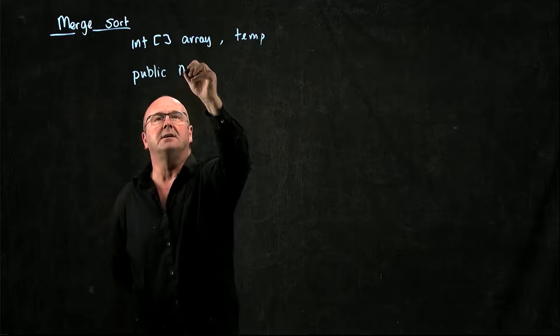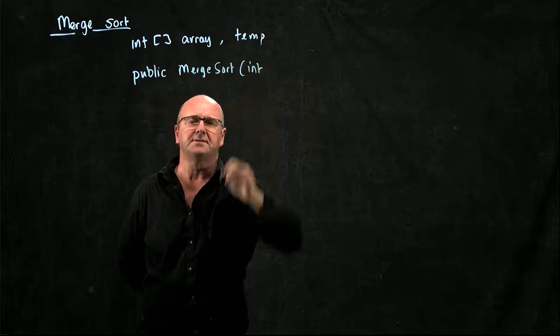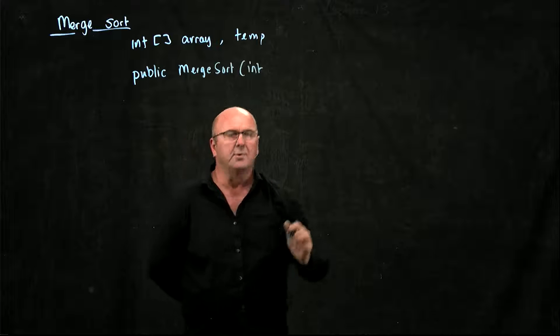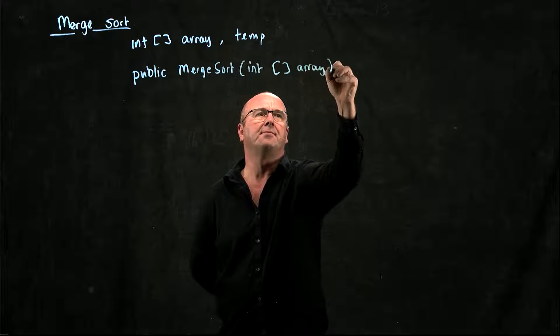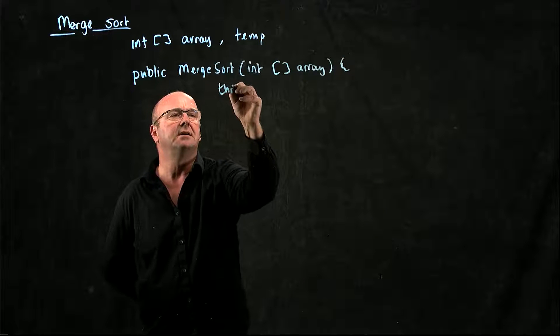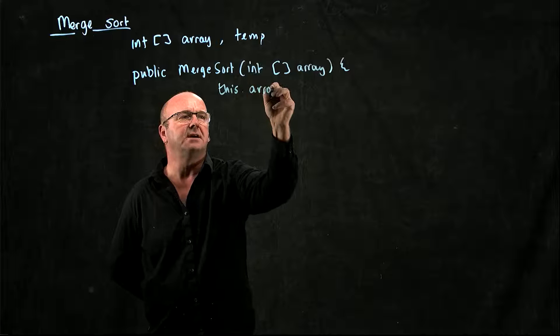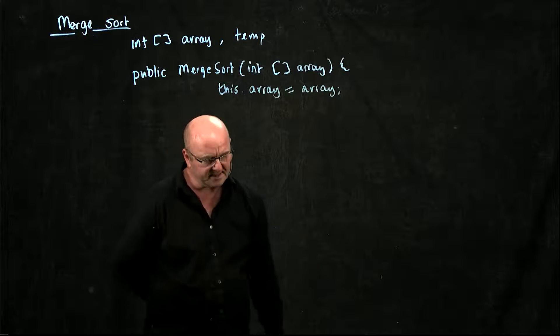And let's have our constructor, and in our constructor for our merge sort class, we're going to accept an array, so let's make this.array equal to array, so now our globally scoped variable is set.